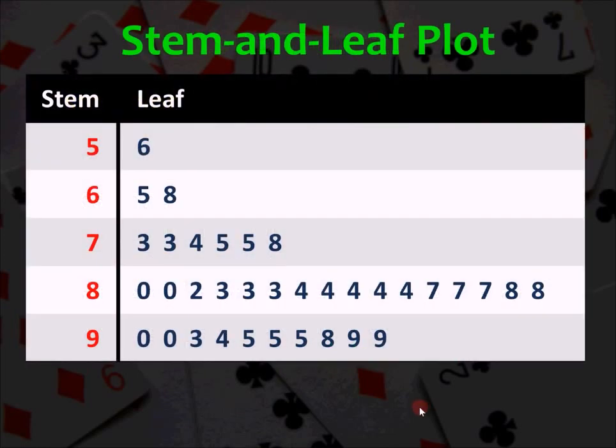So here is the stem plot for the test scores. You see that the stems represents the 10 digits. So 5, 6, 7, 8, 9 represent 50, 60, 70, 80, and 90. The leaves, each leaf represents one student's score. And what you notice is that each leaf can take a value in each row from 0 to 9 for a possible 10 values in each row. And that is one of the characteristics of a stem plot. The number of possible values for each row has to be the same.